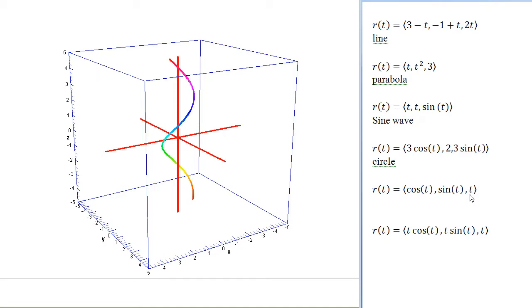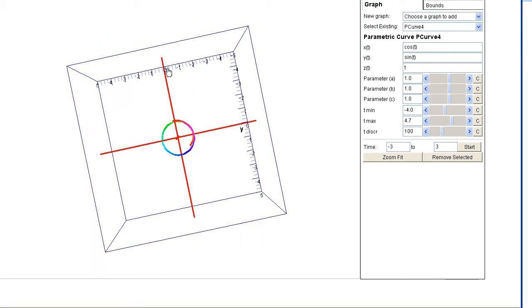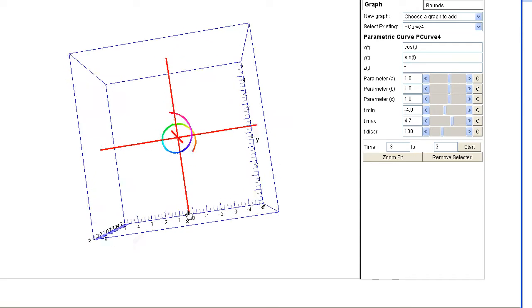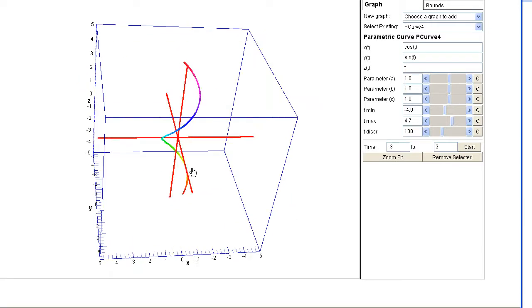So as the z increases, the x and the y are rotating. So we're going to get a circular shape in x and y. So we're getting this rotation going on in x and y. But as that happens, the z value is increasing.